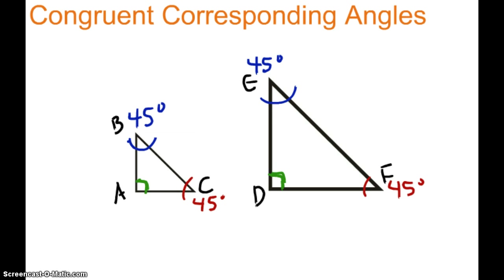Number two: congruent corresponding angles. Corresponding means the same position, so congruent corresponding angles means that the angles in the same position must have the same measure. Angle A corresponds to angle D, and they are both 90 degrees — same position, same measurement. Angle B and angle E have the same position and are congruent. And angle C and angle F are in the same position and are also congruent, both at 45 degrees. So the second critical attribute is congruent corresponding angles.